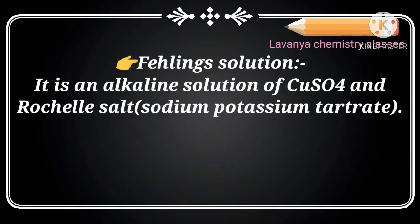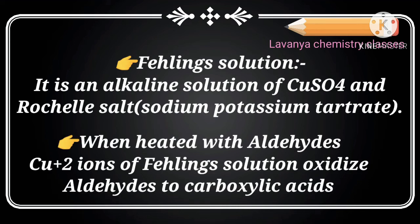Fehling's solution is an alkaline solution of copper sulfate and Rochelle salt. Rochelle salt's chemical name is sodium potassium tartrate. An alkaline solution of copper sulfate and Rochelle salt is called Fehling's solution. When heated with aldehydes, the Cu²⁺ ions of Fehling's solution oxidize aldehydes to carboxylic acids.